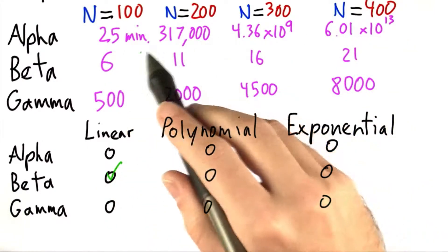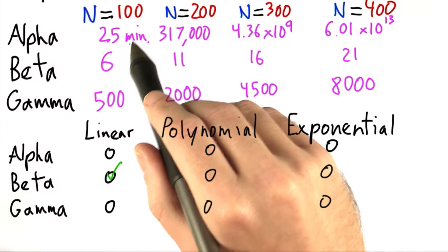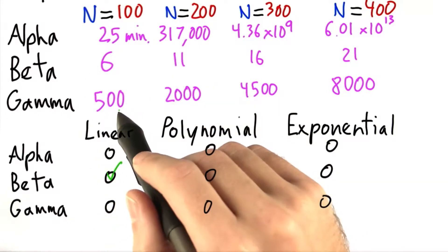Now, alpha just explodes, right? At 100, it doesn't take a whole lot of time. In fact, it takes quite a bit less time than gamma.